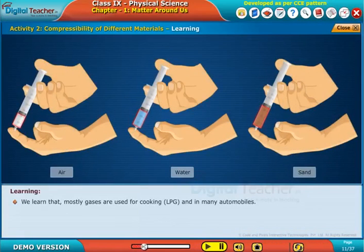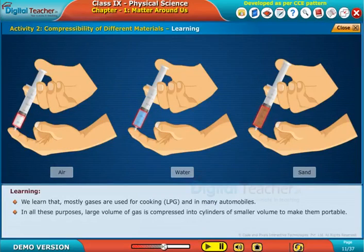We learn that mostly gases are used for cooking, LPG, and in many automobiles. In all these purposes, large volume of gas is compressed into cylinders of small volume to make them portable.